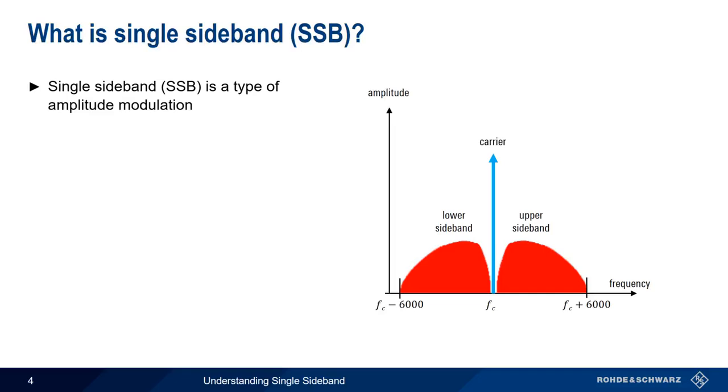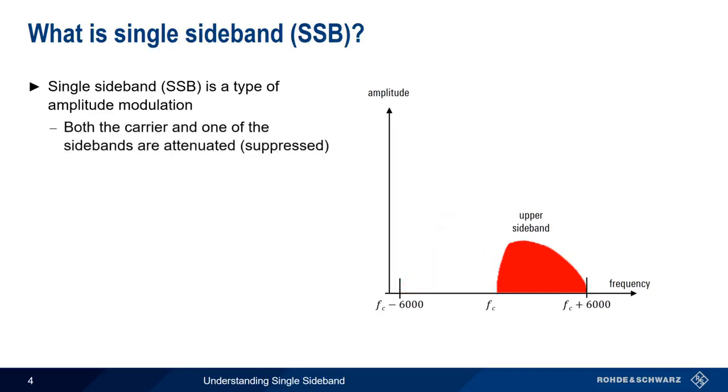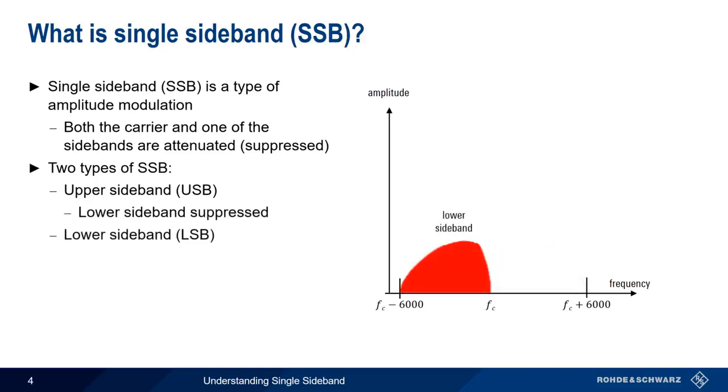Single sideband is a type of amplitude modulation in which both the carrier and one of the sidebands is suppressed. Recall that both sidebands contain the same information, so there is no loss of information if we suppress one of the sidebands. Which sideband should we suppress? There are actually two different types of single sideband. Upper sideband suppresses the lower sideband, whereas lower sideband suppresses the upper sideband.